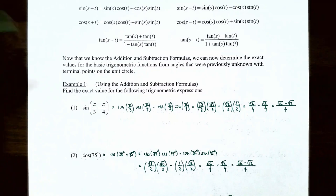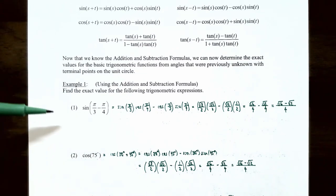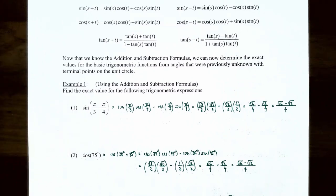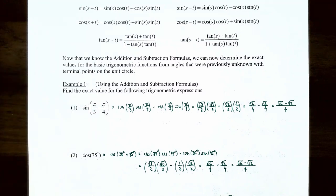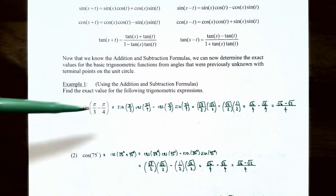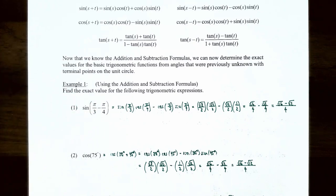Now that we know the addition and subtraction formulas, we're going to determine the exact value for basic trigonometric functions for angles previously unknown to us on the unit circle. Example one: using the addition and subtraction formulas, find the exact value. Number one: sine of (π/3 - π/4). Simplifying the argument, π/3 - π/4 equals π/12, so we want the exact value of sine(π/12).